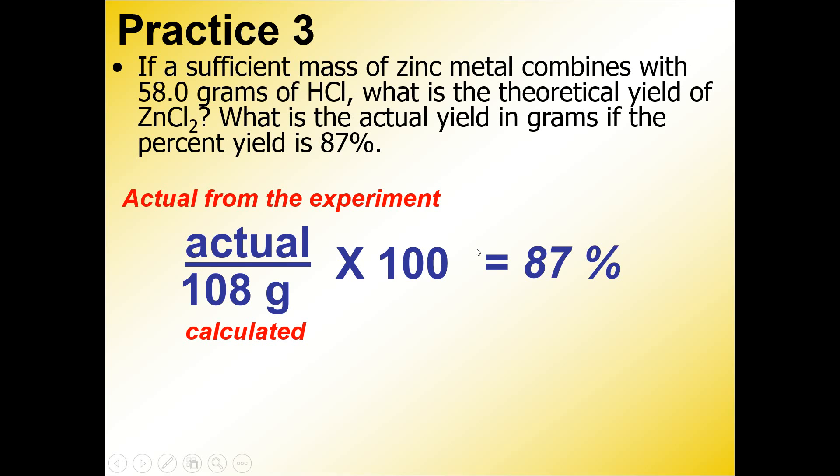The question already told us that there's a percent yield of 87 percent. We just calculated the theoretical yield, and now we need to calculate the actual yield, meaning how much did this person get in the experiment. They were supposed to get 108 grams. The percent yield was reported as 87 percent. How can we calculate the actual?